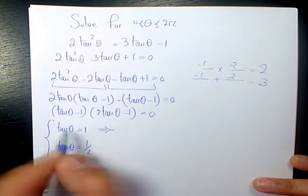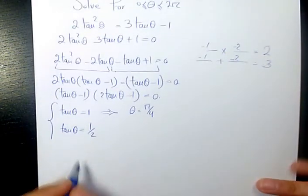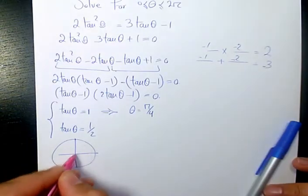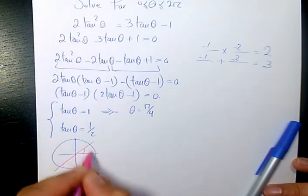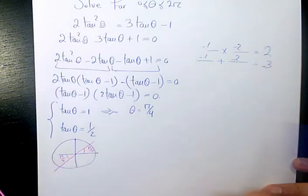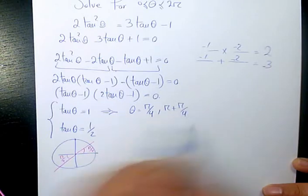So tan θ = 1 means that θ is going to be π/4. We had it before. Tan θ is positive in quadrant 1 and quadrant 3. So that's π/4. So one answer is π/4. The other one is going to be π + π/4.